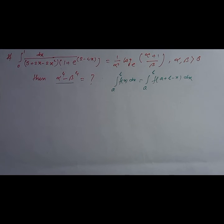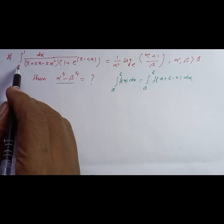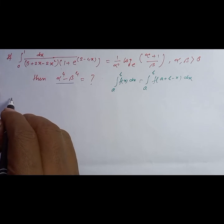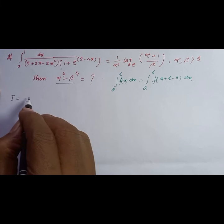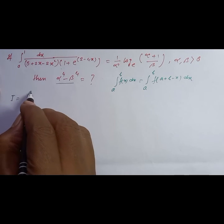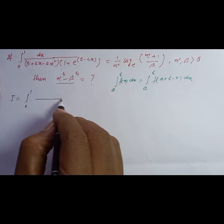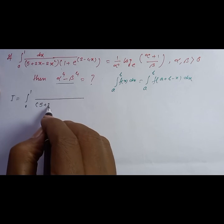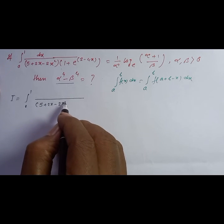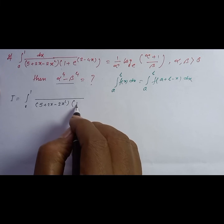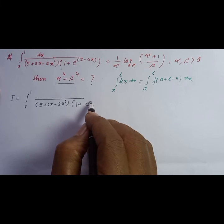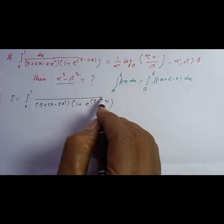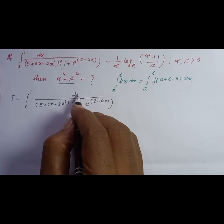So here we have the integral from 0 to 1. Let I = integration from 0 to 1 of dx divided by (5 + 2x - 2x²)(1 + e^(2-4x)).